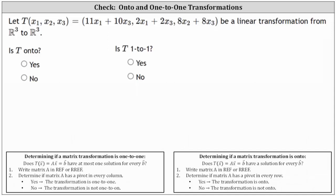In this problem, we're given the equations for T of x and told T of x is a linear transformation from R³ to R³. We're asked to determine if the transformation is onto and or one-to-one.